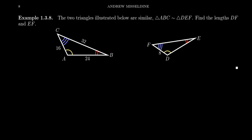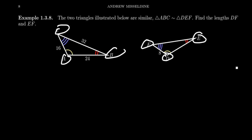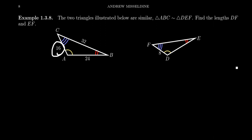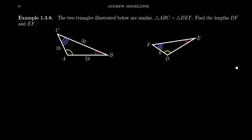Consider the two triangles on the screen, ABC and DEF. These triangles are similar to each other because their angles are congruent: A and D are congruent angles, B and E are congruent angles, and F and C are congruent angles. We know the three side lengths of triangle ABC — side AC is length 16, side AB is 24, and CB is 32 — but we only know side FD for the other triangle. Because they're proportional, if I take segment AC over DF, this is going to equal the same fraction for the other corresponding parts: AB divided by DE, and BC over FE — these are all going to equal each other, some constant.